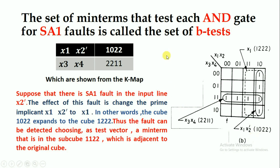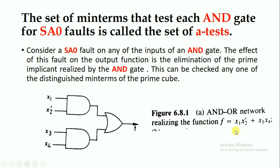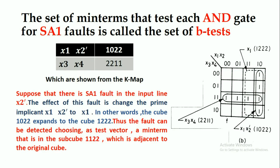When there is a stuck-at-one fault, for example at x2 dash, then x2 dash becomes one. The product x1·x2' then becomes simply x1, because x1·1 = x1. So when there is a stuck-at-one fault at x2 dash, the product term becomes x1. When representing x1 in the K-map as a cube, it expands to 1·2·2·2. So the cube expands from 1·0·2·2 to a larger cube 1·2·2·2.